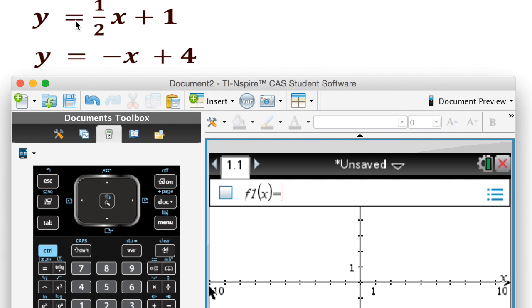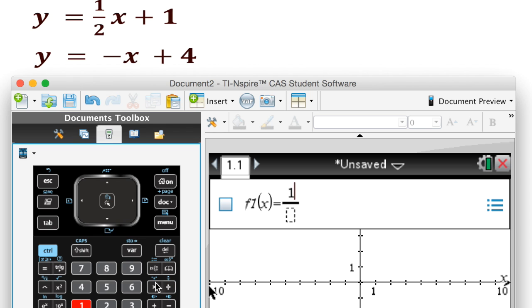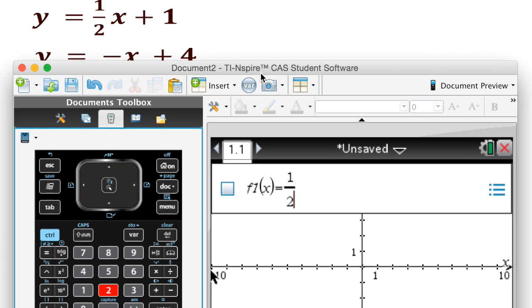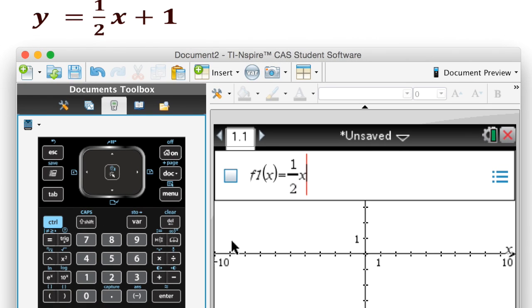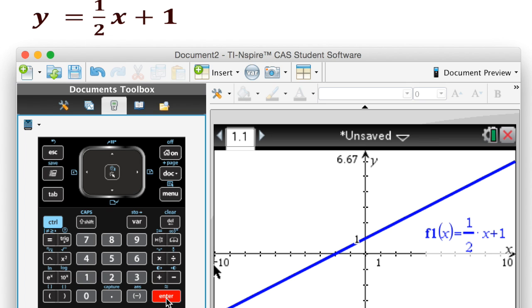And I'm just going to type in each equation. This one says 1 half x, so I can do my division sign here, or my fraction here, 1 half. The x, of course, is found down here. There, 1 half x plus 1. I'll hit enter, that one will graph that one for me.